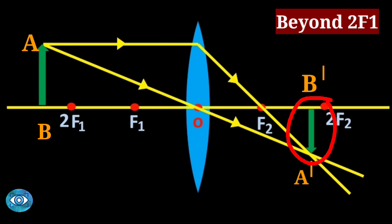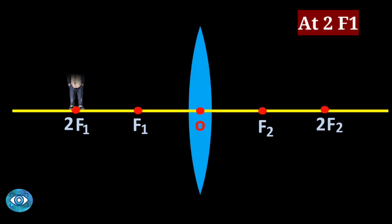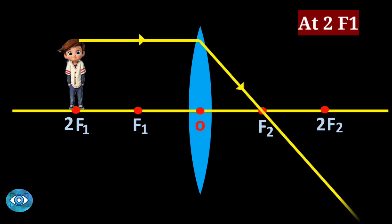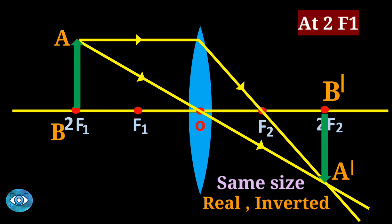Case three: the object is at 2f1. Consider two rays from the top of the object — the refracted rays meet exactly at 2f2. The image is formed at 2f2 and is the same size as the object. This is the ray diagram for case three.